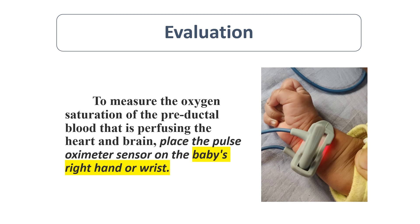We connect the sensor to the right hand because blood supply to the right arm is from the right arm branch of the aorta, which is before the ductus. So blood in the right arm is pre-ductal, reflecting the same oxygen saturation as in the heart and brain. Post-ductal blood from the left arm or legs only reaches the lower body, and that saturation differs from what reaches the brain and heart.